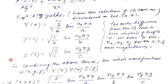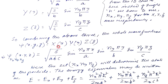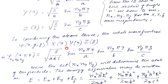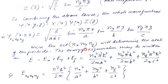The combination of nx, ny, and nz gives a set of quantum numbers that determines the quantum state of the particle. Combining the three wave functions, psi(x,y,z) with subscript nx, ny, nz equals root(8/ABC)·sin(nxπx/A)·sin(nyπy/B)·sin(nzπz/C). Here psi is an eigenfunction and the energy values are the eigenvalues.